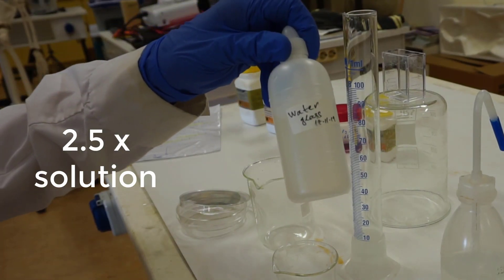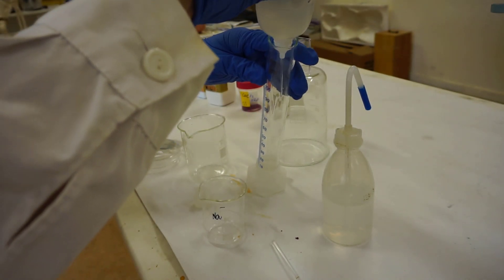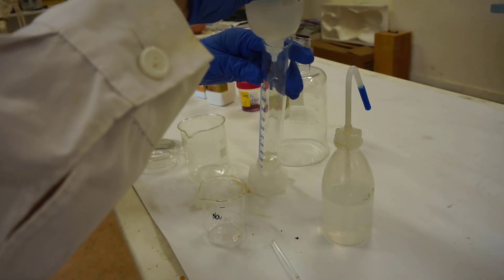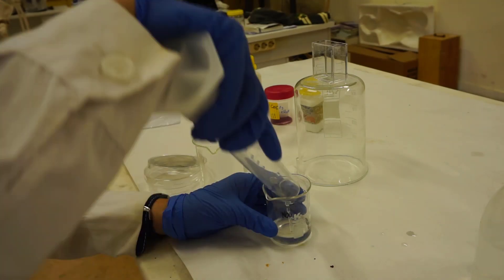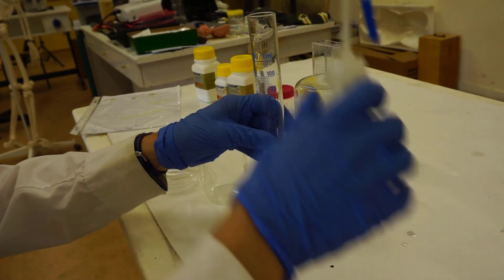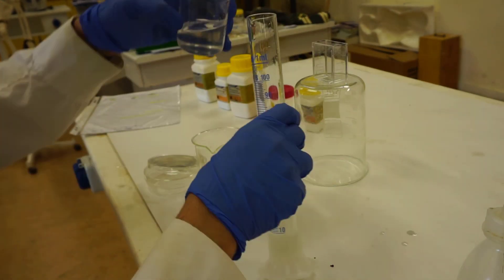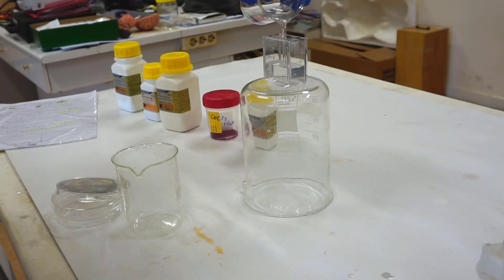So to prepare 50 milliliters of working solution, I diluted 20 milliliters of water glass with 30 milliliters of water, mixed them thoroughly and poured them into a small plastic container.